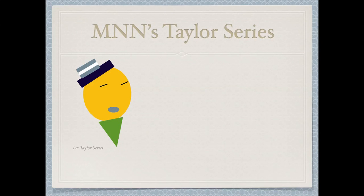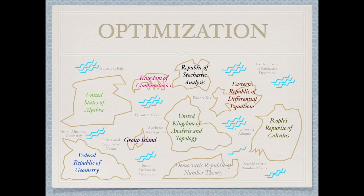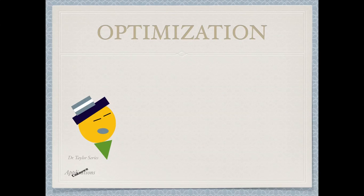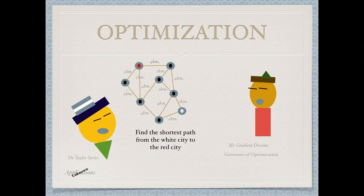MNN's Taylor series presents: Applications Unknown Today, featuring the City of Optimization. The City of Optimization is located in the engineering Atlantic, just below the Eastern Republic of Differential Equations and just left of the People's Republic of Calculus. It's a city that has made a remarkable impact in the engineering area of Mathematicon. To give us an introduction and a tour of the city, we have invited the governor, Mr. Gradient Descent.